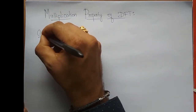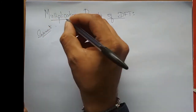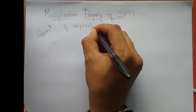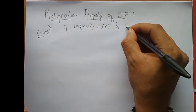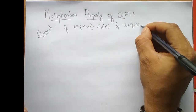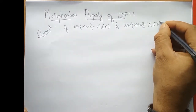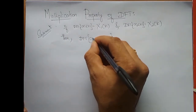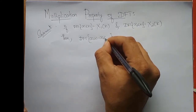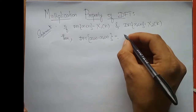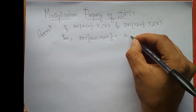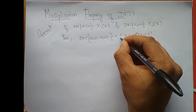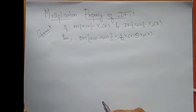The statement of the multiplication property of DFT says that: if DFT of x1(n) is equal to X1(k) and DFT of x2(n) is equal to X2(k), then in the time domain if I multiply two signals x1(n) and x2(n), in the frequency domain it will be circular convolution — X1(k) N-point circularly convolved with X2(k) — but with a scaling factor of 1/N, where N is the number of points.